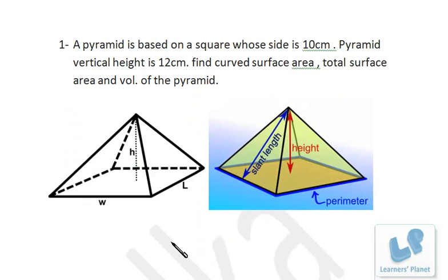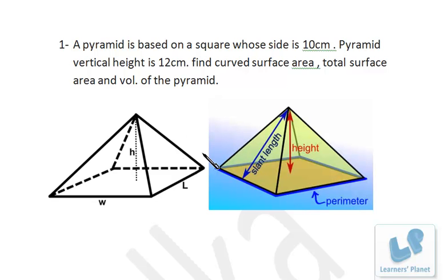Let's try this problem. A pyramid is based on a square whose side is 10 cm and the pyramid's vertical height is 12 cm. Find the curved surface area, total surface area and the volume of the pyramid. These figures are drawn for your reference. The base is square, so both W and L are the same — both are 10.